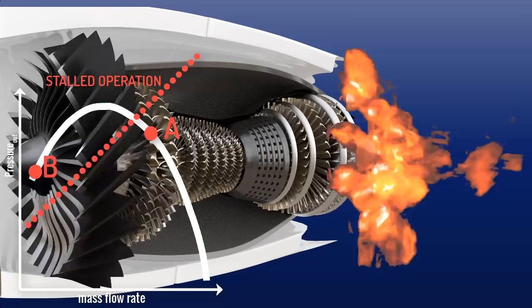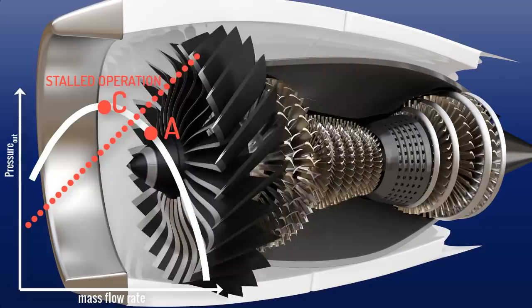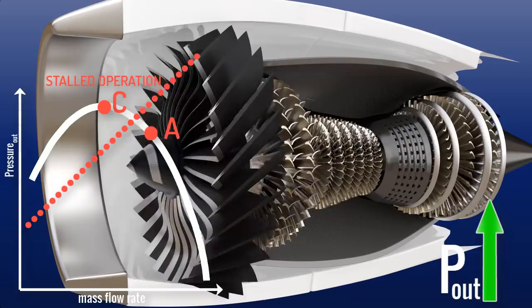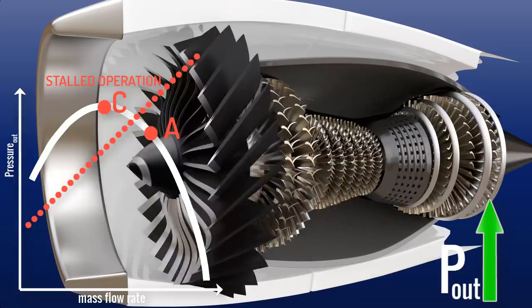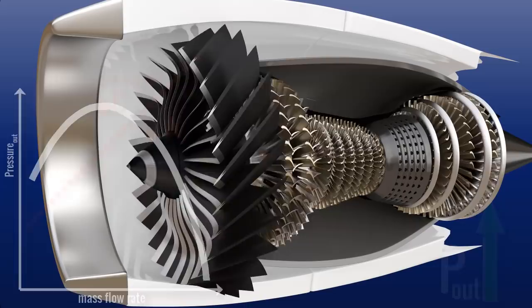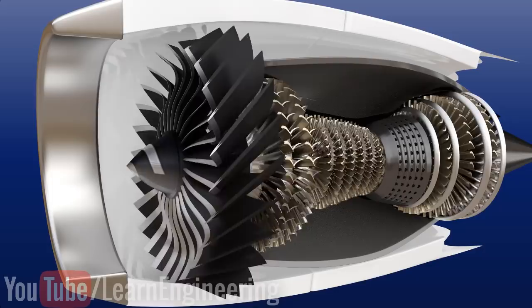Now for the second possibility — assume that due to stalling, the initial operating point A moves to point C. Here at the compressor outlet, the pressure increases suddenly and a slight drop in mass flow rate occurs. In this case, there is sufficient air for complete combustion of the fuel, but not enough for sufficient combustion chamber cooling. These conditions and the high pressure in the middle of the engine cause sudden explosions, and the exhaust can escape through either side of the engine. This process can repeat several hundred times per second until pressure equilibrium is achieved. This is known as a compressor surge.